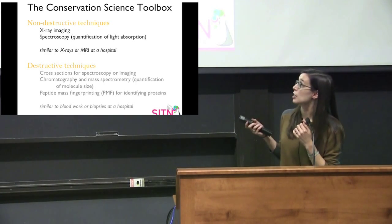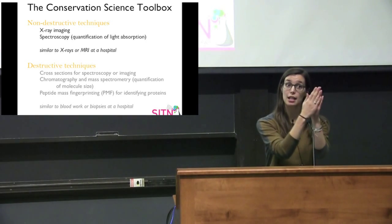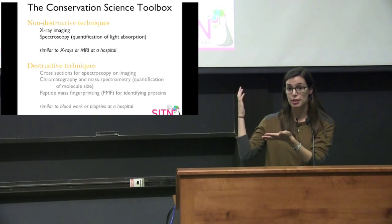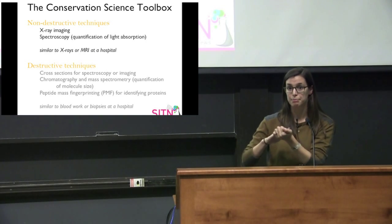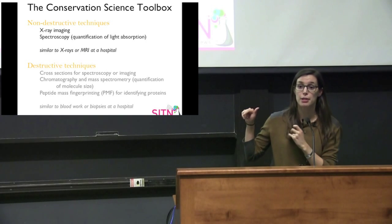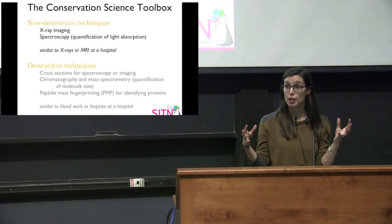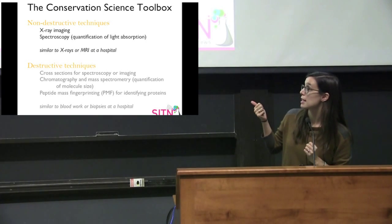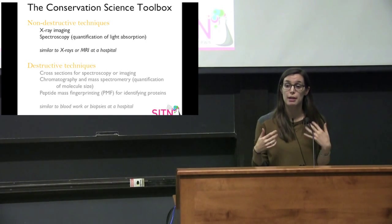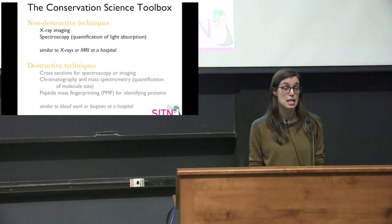One of the destructive techniques is actually taking a cross section, where with a painting they'll go in and take a slice of the painting to get at all the different layers I talked about, and then use either non-destructive or destructive techniques to analyze them. There are also techniques called chromatography and mass spectrometry, which are generally used together and are good at quantifying how big the molecules present are. The main destructive technique I'll spend most of my time on is peptide mass fingerprinting, which is a tool used to identify proteins.